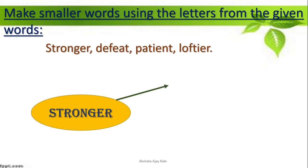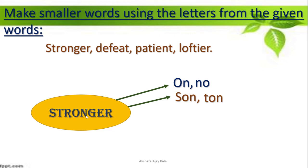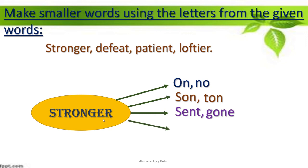From 'stronger': two-letter words — 'on', 'no'. Three-letter words — 'son', 'ton'. The words you make should have a meaning. Four-letter words — 'sent', 'gone'. You can make some more also. Five-letter word — 'stone'. Six-letter word — 'strong': S, T, R, O, N, G — strong.